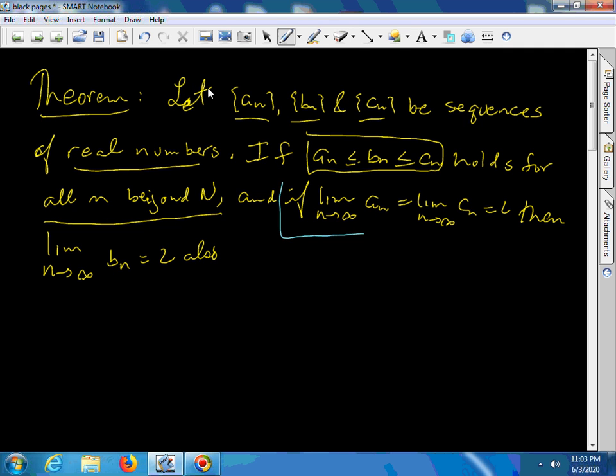If the limit of aN equals L and the limit of cN also equals L, then because bN is sandwiched in between the two, then the limit of bN must also be L.